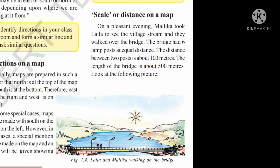On a pleasant evening, Malaika went to see the village stream and they walked over the bridge. The bridge had six lamp posts at equal distances. The distance between two poles is about 100 meters. Here you can see on your screen the sketch of the bridge, and here you can see six lamp posts. The distance between two posts is about 100 meters.